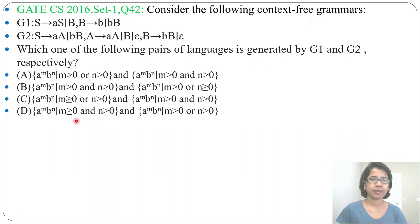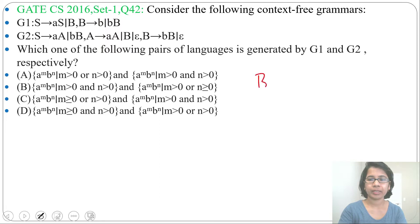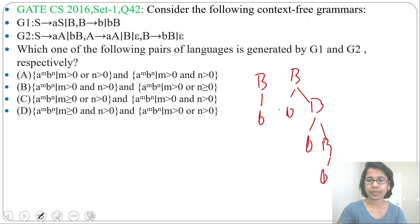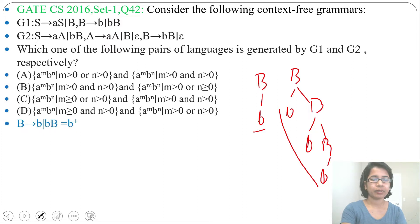Four options are given. Let's analyze each grammar. First Grammar: S tends to AS or B, and B tends to B or BB. From B, which strings can you generate? From B you can generate minimum 1 B, then any number of B. So you can generate any number of B — minimum 1 B, then any number. The regular expression will be B positive closure.